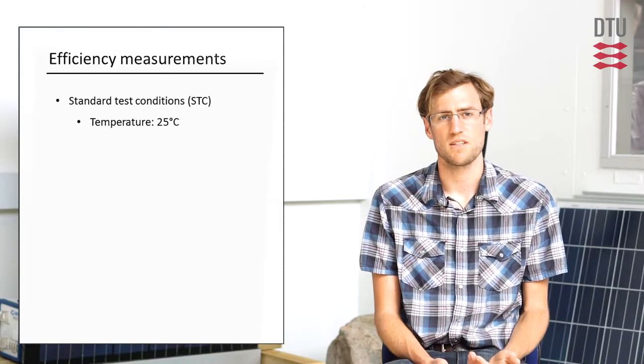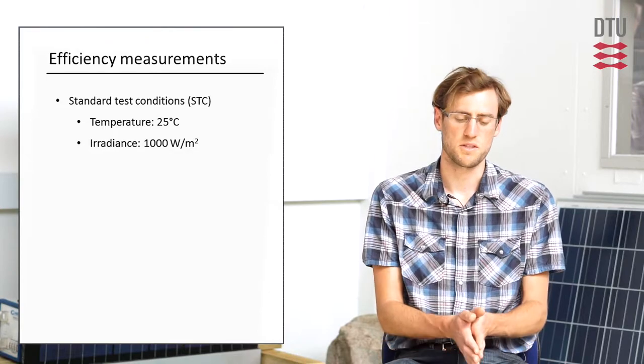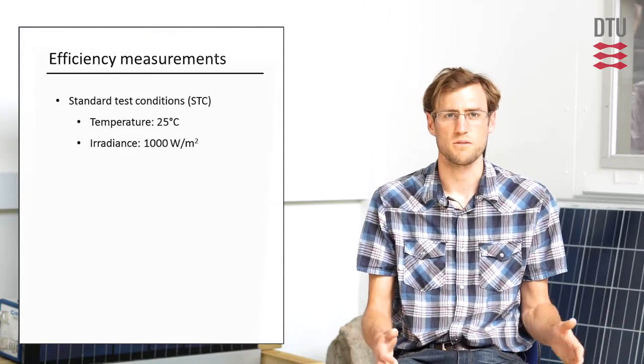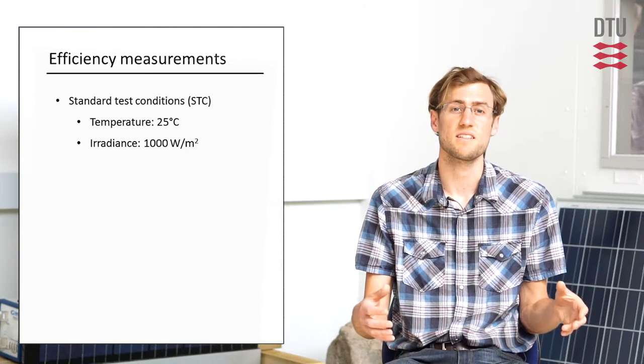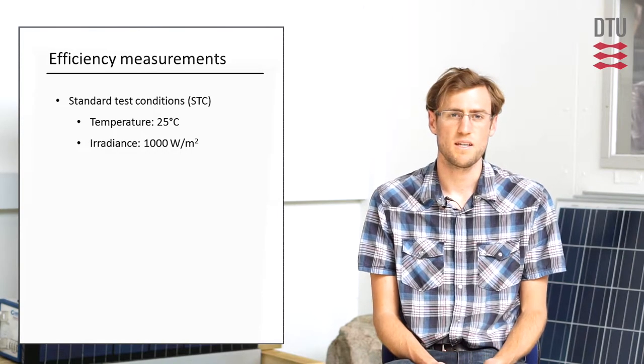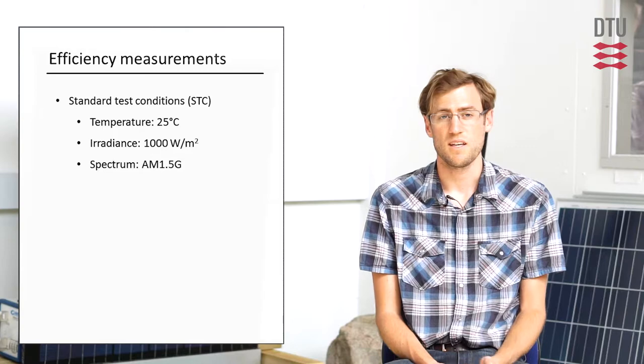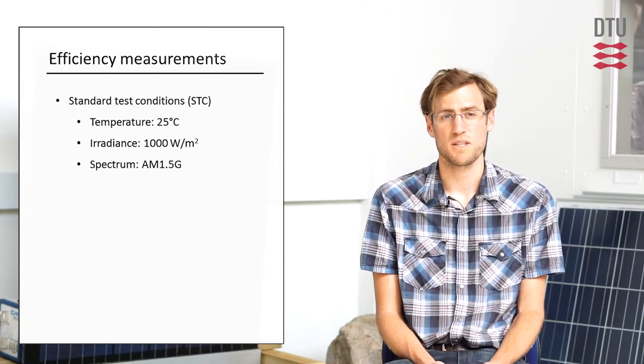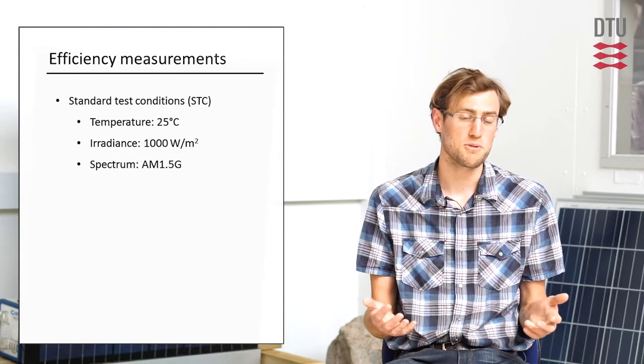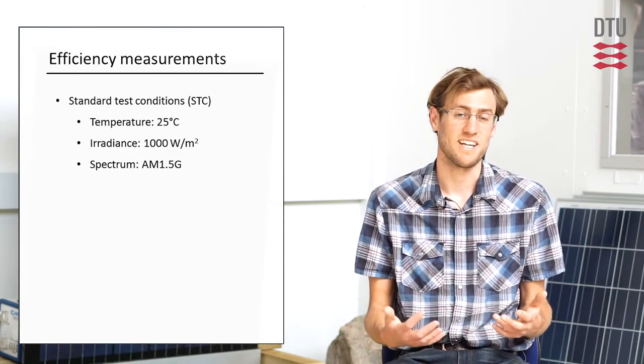An irradiance of 1000 watts per meter squared, so if you picture a one by one meter square, you would have 1000 watts of light intensity on that area, and a spectrum of AM 1.5G. The AM 1.5G reference spectrum is representative of the average annual spectrum in the contiguous U.S. on a clear sky day.